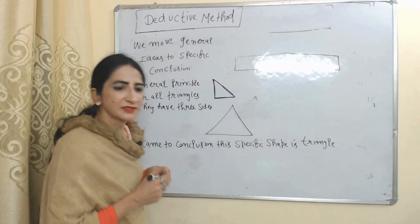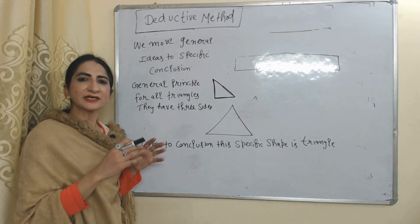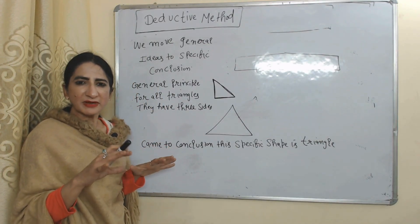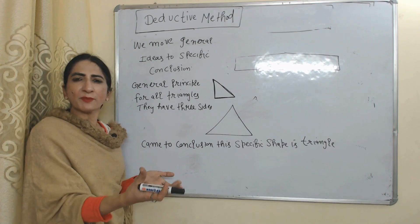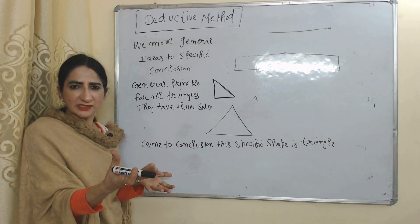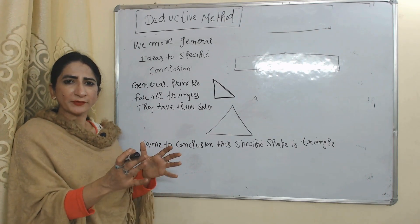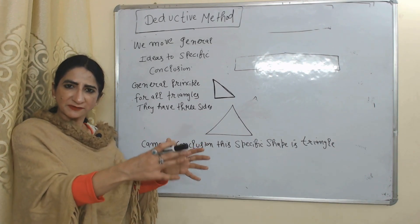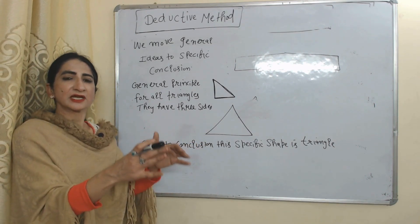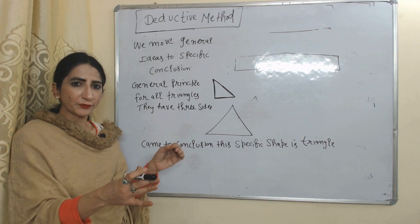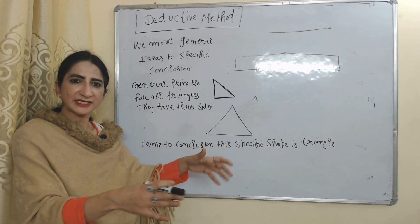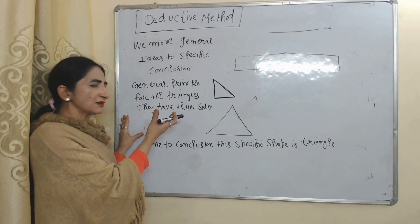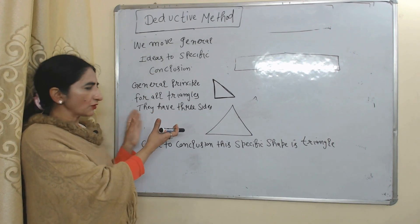Now we will discuss the deductive method. The deductive method is just opposite to the inductive method. Here we move from a general idea to a specific conclusion. For example, a general principle: all triangles have three sides.